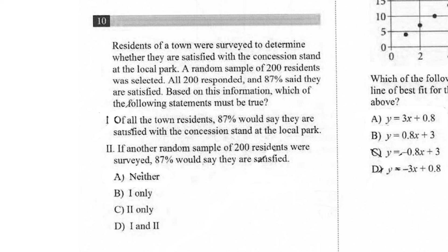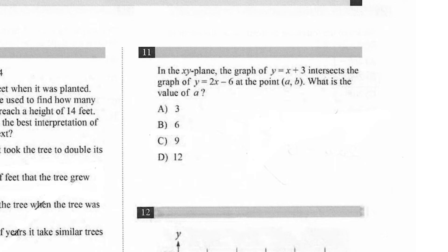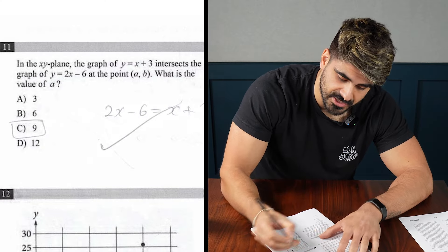How many solutions does it have? Two. Which of the following is the best interpretation of the number two? That two indicates the average number of feet that the tree grew per year. Based on this information, which of the following statements must be true? If there's like a million of them, you can't say 200 is representative, right? In the xy plane, the graph of y equals x plus three in six. So you just equate them. So x is nine.